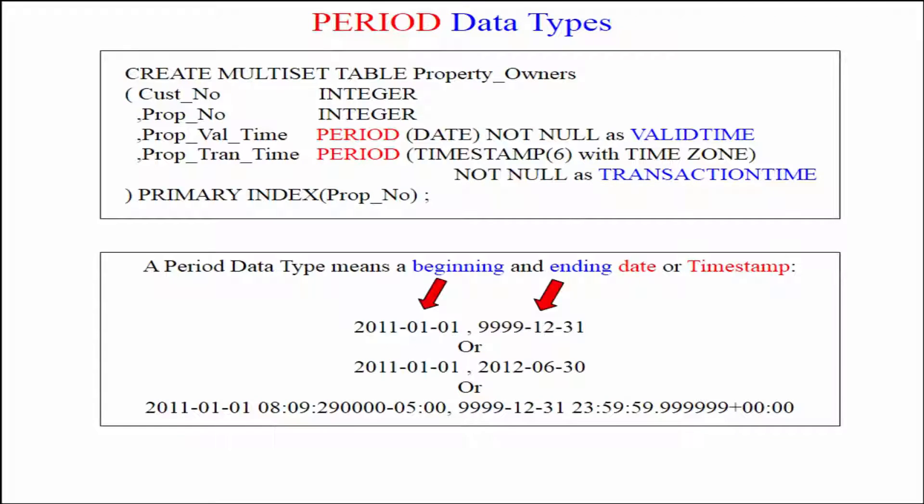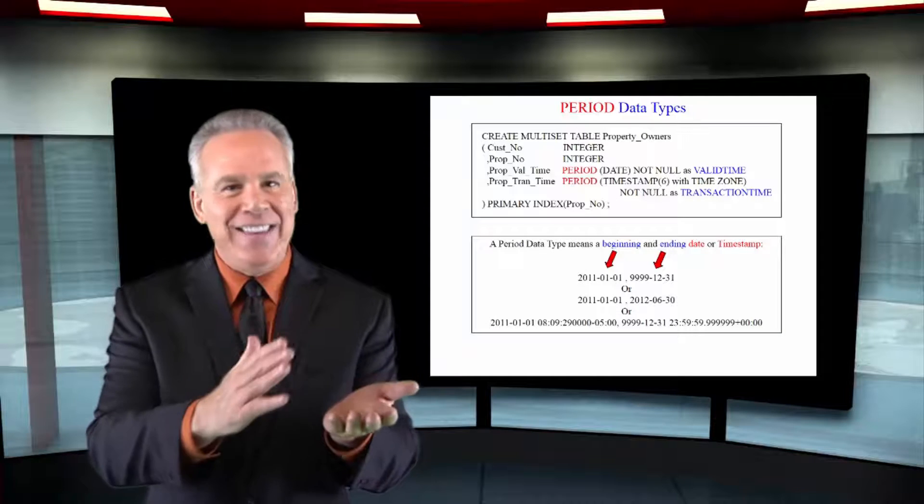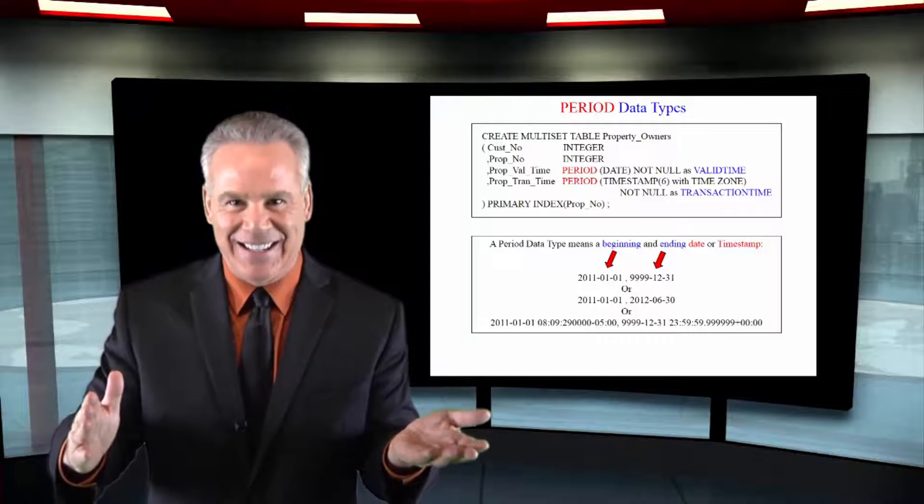So anytime you see the 9999, oh, the row is still open. Notice down below, we actually have a timestamp. A timestamp is the date, a space, and the exact time down to the millisecond.